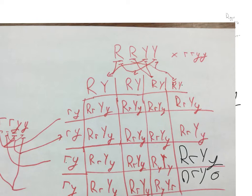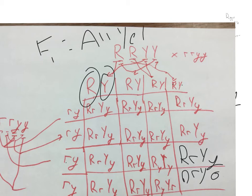But notice, what would be the phenotypic ratio for the F1? They would all be round and yellow. What would be the genotypic? The genotypic ratio would be all big R, little R, big Y, little Y.